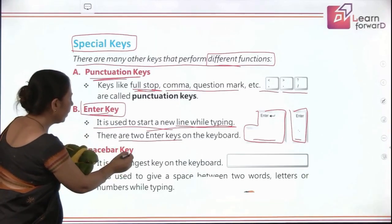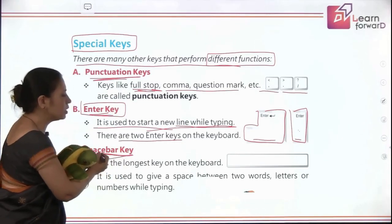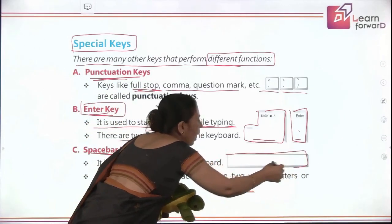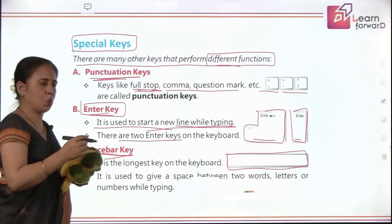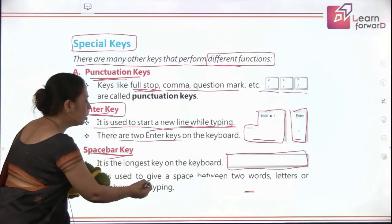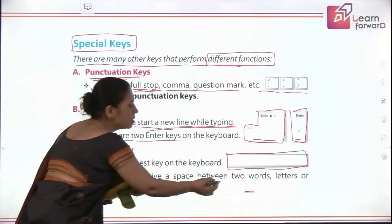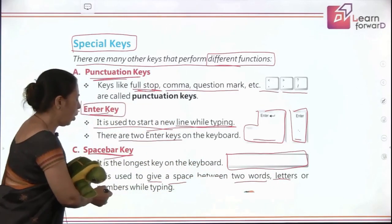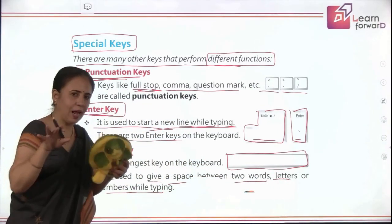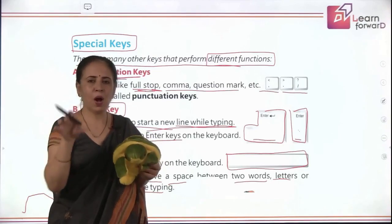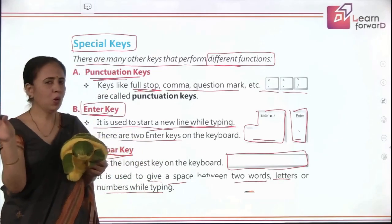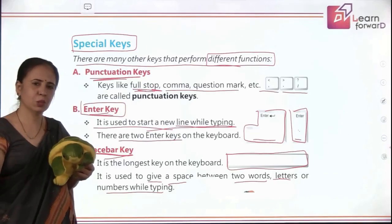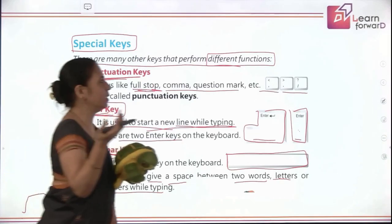We also have a space key — the longest key on the keyboard is called the space key. It is used to give space between two words, letters, or even numbers. When you are typing and you want to give a space after a word or some numbers, just press the space bar and the space is created.